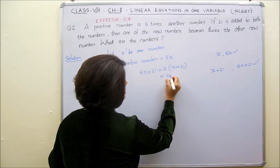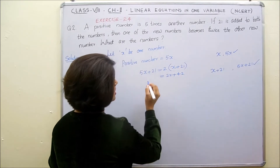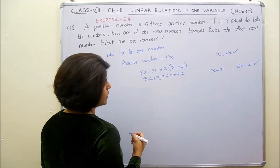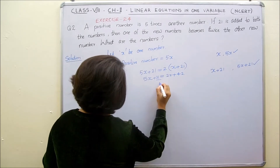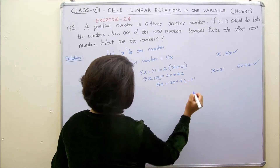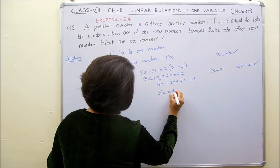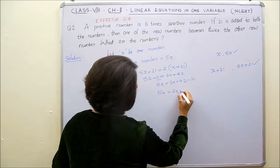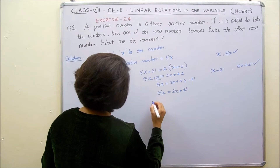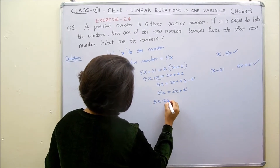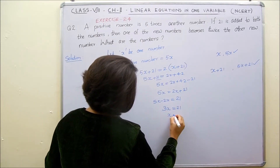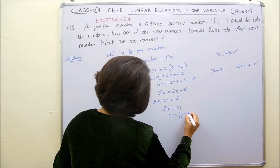So this would become 2x plus 42, and the LHS becomes 5x plus 21. Now we have to eliminate 21 — it transposes to the RHS. So the equation becomes 5x equals 2x plus 42 minus 21, that is 5x equals 2x plus 21. Now again we eliminate 2x from the RHS, then it becomes 5x minus 2x which is equal to 21, that is 3x equals 21. Therefore x equals 21 divided by 3, that is 7.